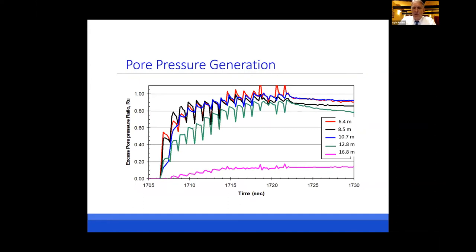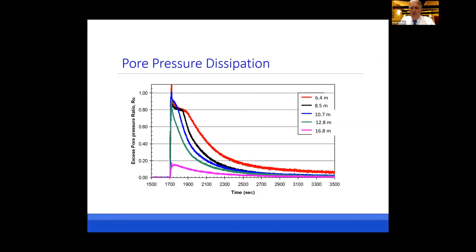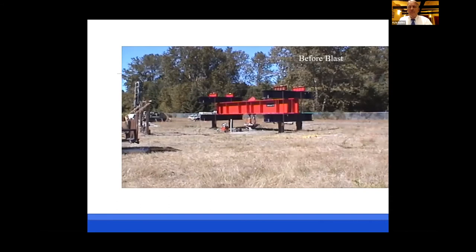We monitored the excess pore pressure ratio RU — an RU value of one indicates liquefaction. In the zone from 6 meters to about 13 meters, we're getting RU values between 0.9 and 1, indicating the soil is essentially liquefied. Down at the tip of the pile, excess pore pressures are less than about 15%. Pore pressures dissipated from the bottom upwards, taking about 17 minutes to return to near-zero.